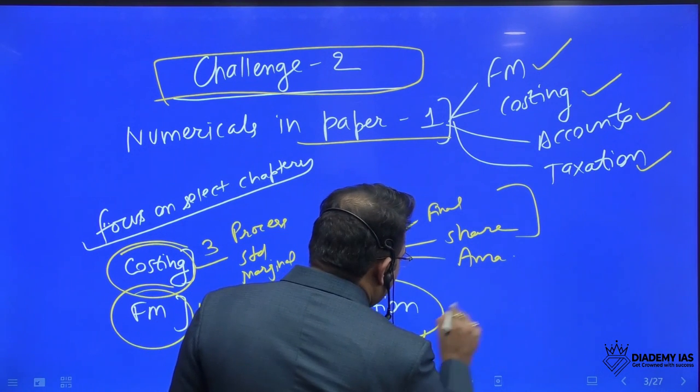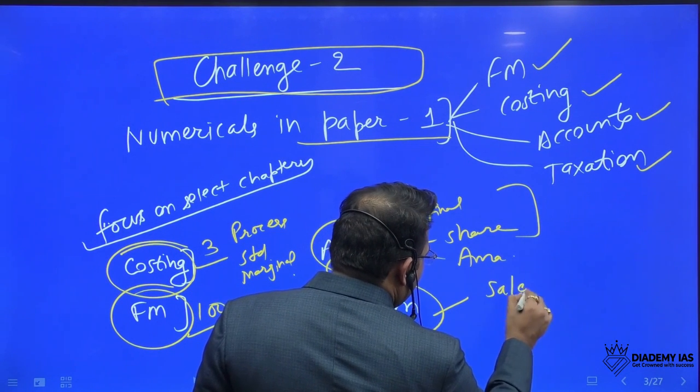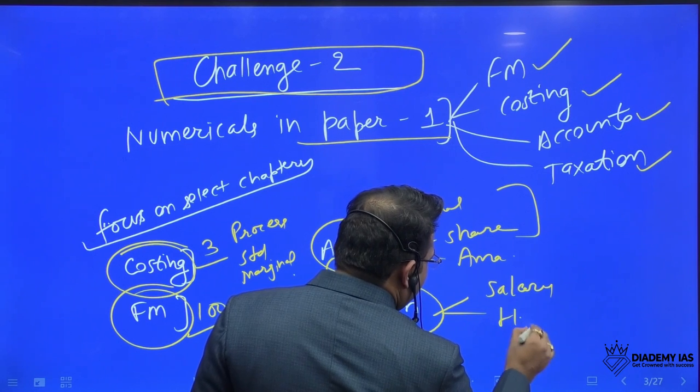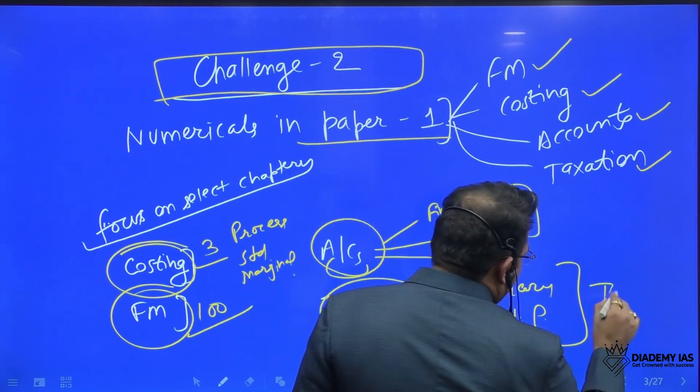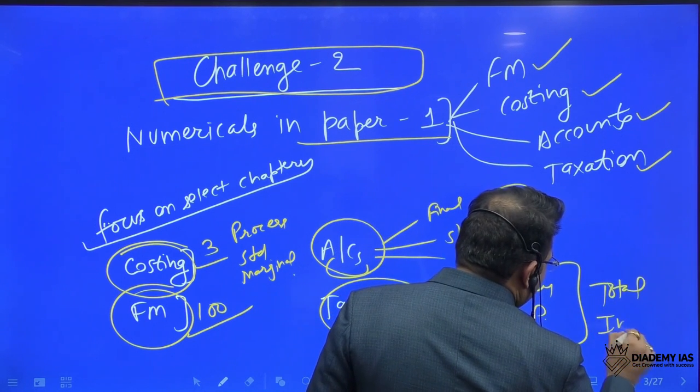Similarly, in the taxation, two important topics: salary, house property. And along with this, the total income. If you solve these, then it is sufficient.